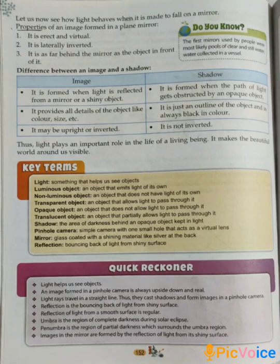Difference between an image and a shadow. An image is formed when light is reflected from a mirror or a shiny object, whereas a shadow is formed when the path of light gets obstructed by an opaque object. An image provides all details of the object like color, size, etc., but a shadow is just an outline of the object and is always black in color. An image may be upright or inverted, whereas a shadow is not inverted.